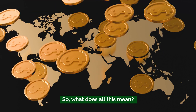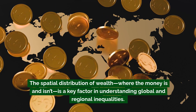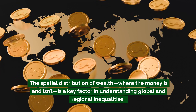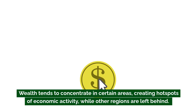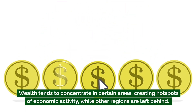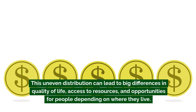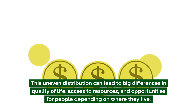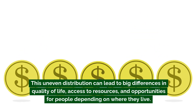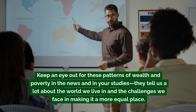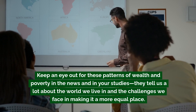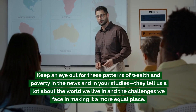So what does all this mean? The spatial distribution of wealth — where the money is and isn't — is a key factor in understanding global and regional inequalities. Wealth tends to concentrate in certain areas, creating hot spots of economic activity while other regions are left behind. This uneven distribution can lead to big differences in quality of life, access to resources, and opportunities depending on where you live. Keep an eye out for these patterns of wealth and poverty — they tell us a lot about the world we live in and the challenges we face in making it a more equal place.